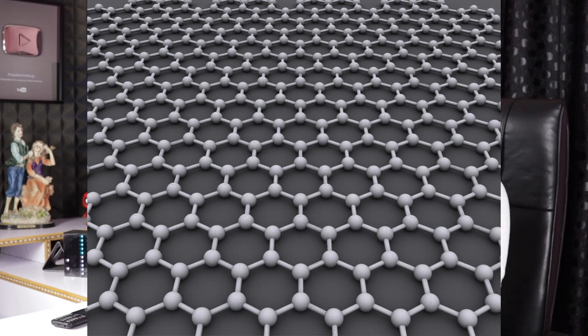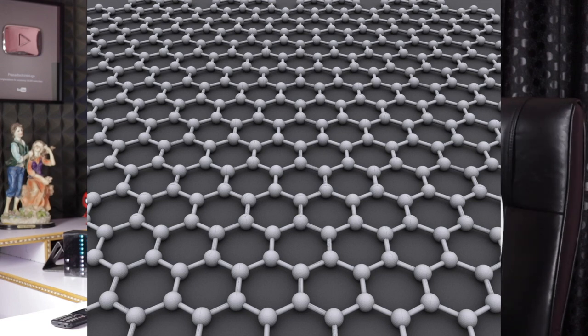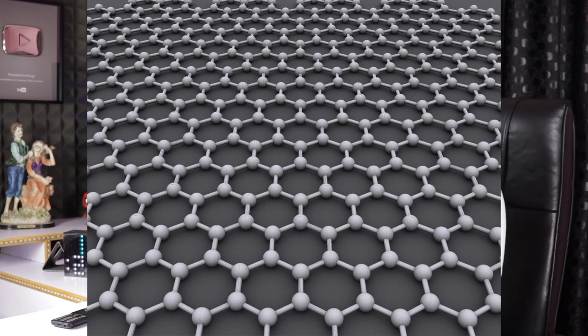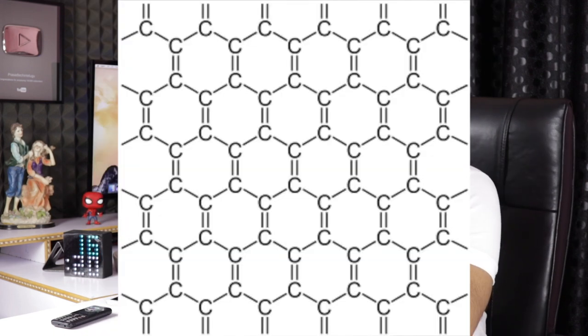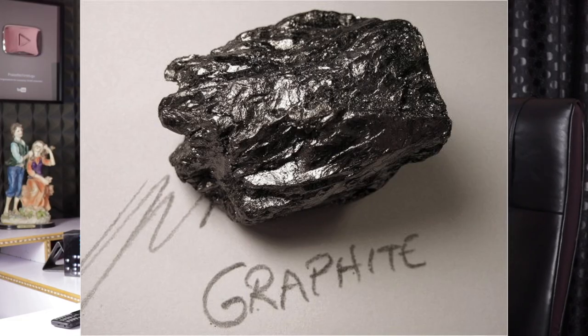Graphene has a molecular structure made of hexagons and atoms. It is composed of carbon atoms — Graphene is a single sheet of carbon arranged in a two-dimensional sheet.